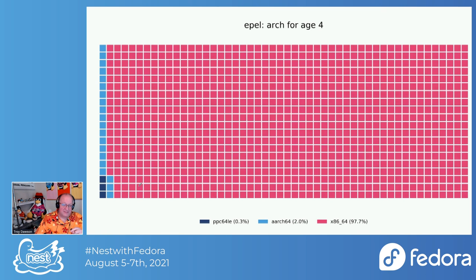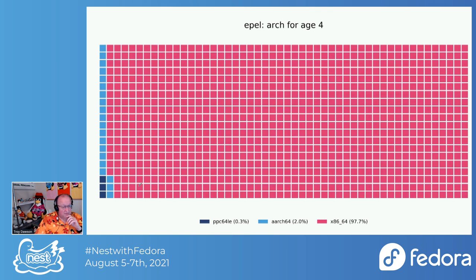This is why x86_64 is so interesting versus everything else — all that red is x86, 98% of the machines. We do have a decent chunk of aarch64 and PowerPC, but S390X is so far off the graph it doesn't even measure 1%.